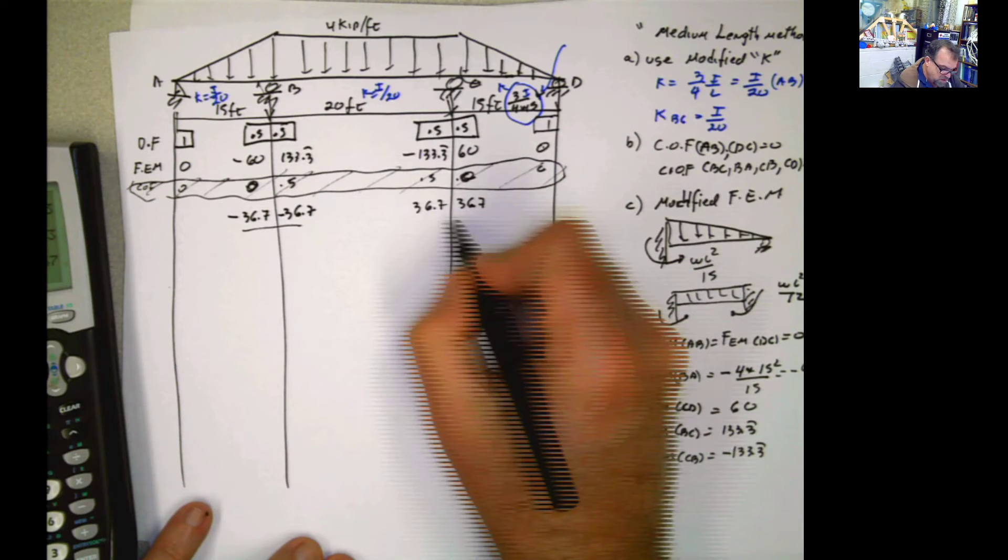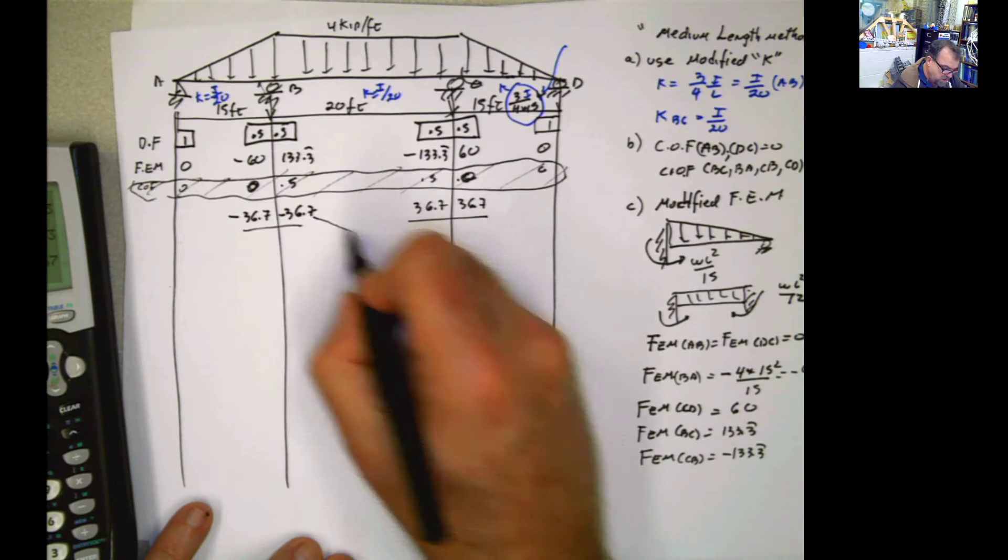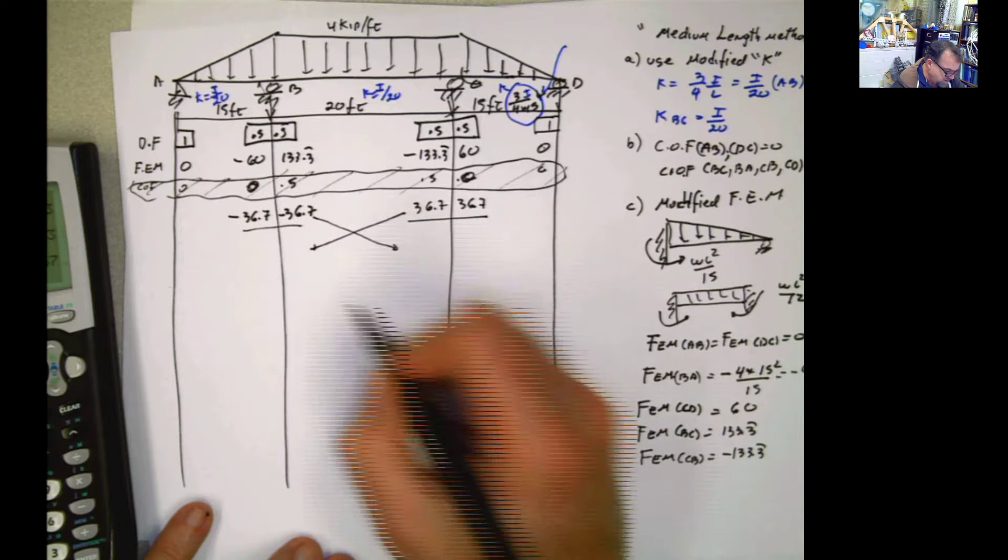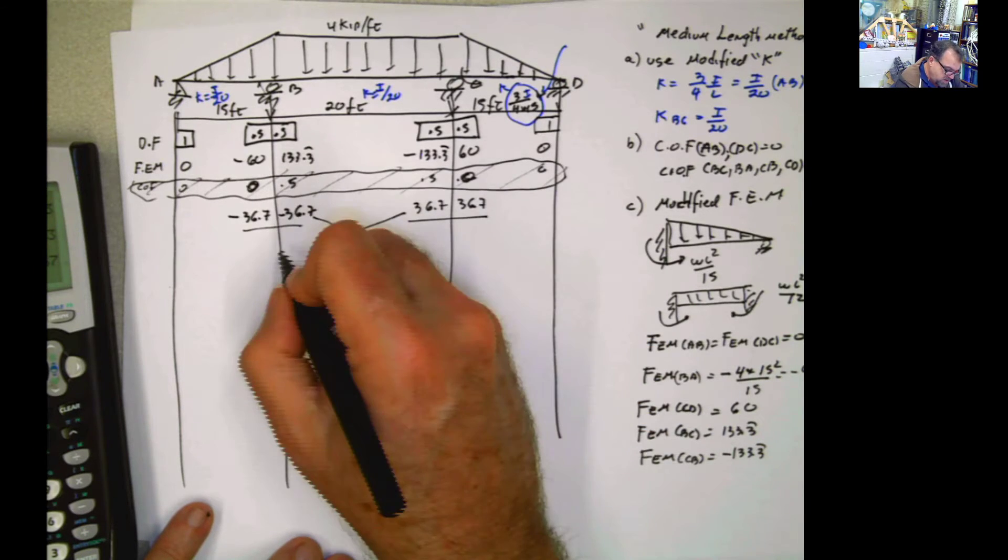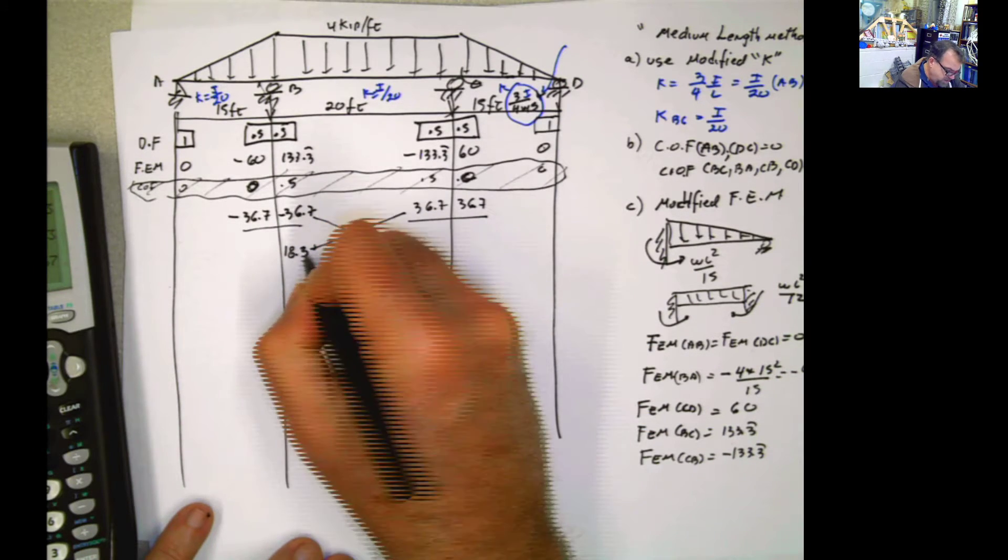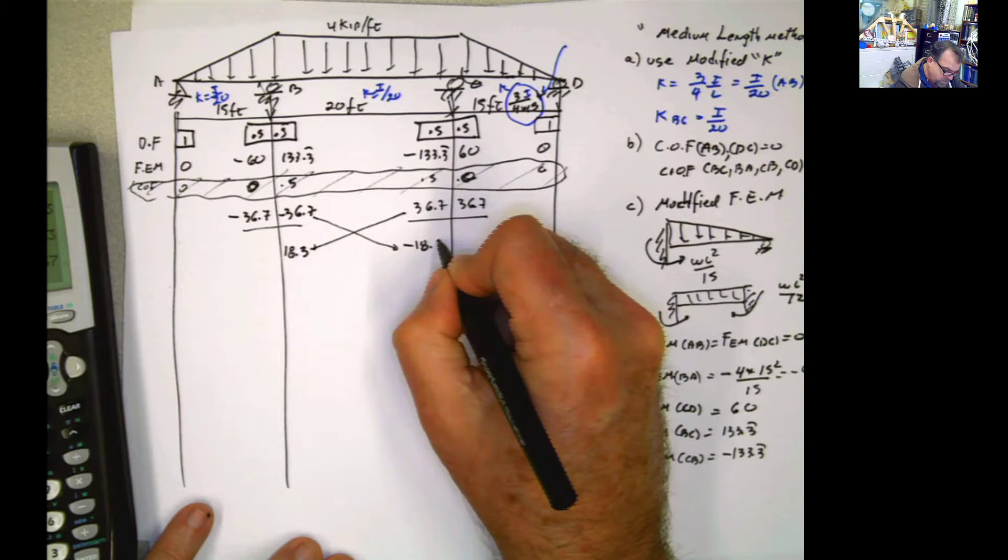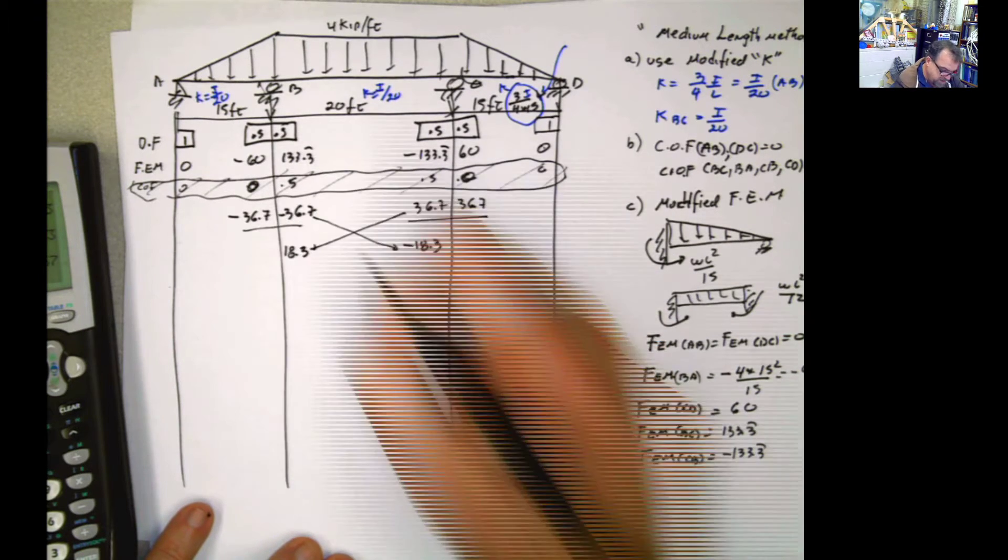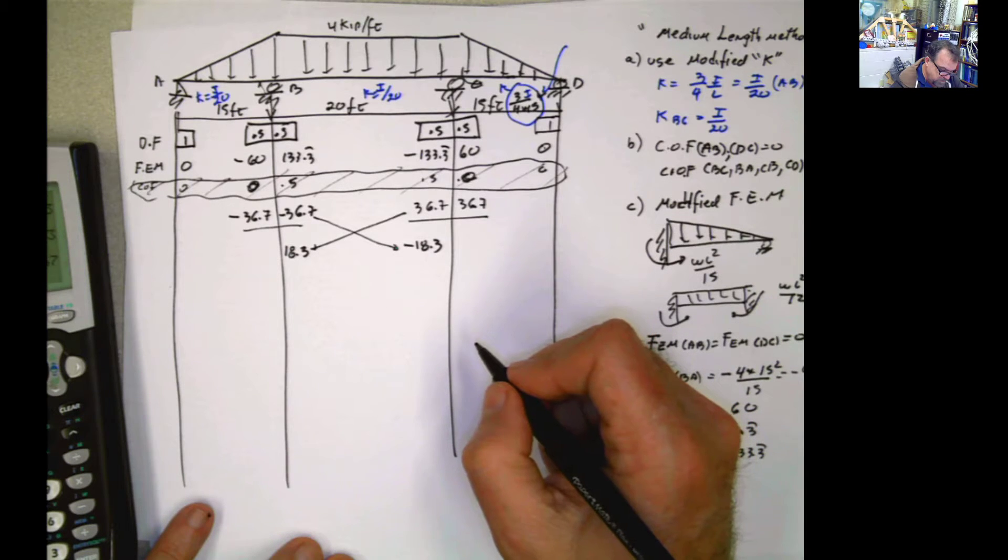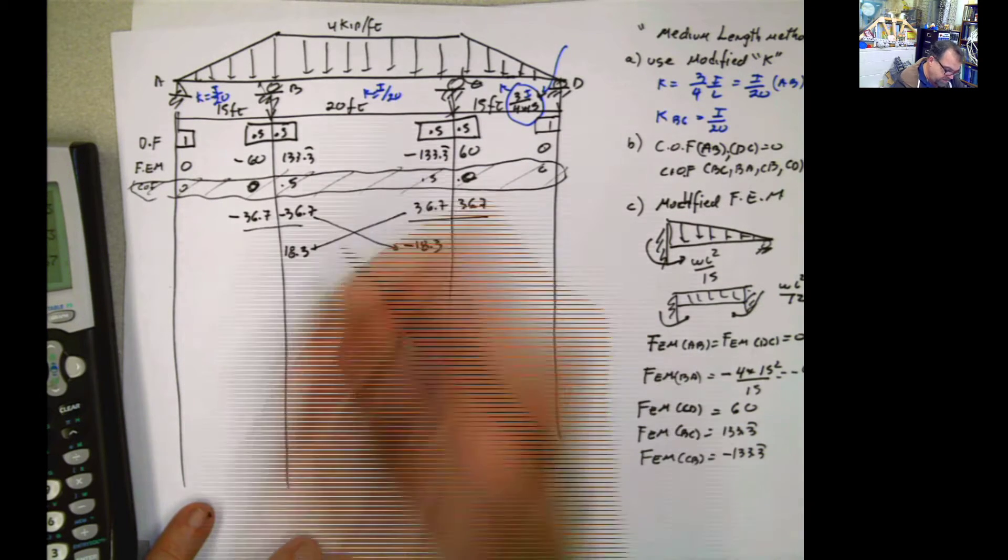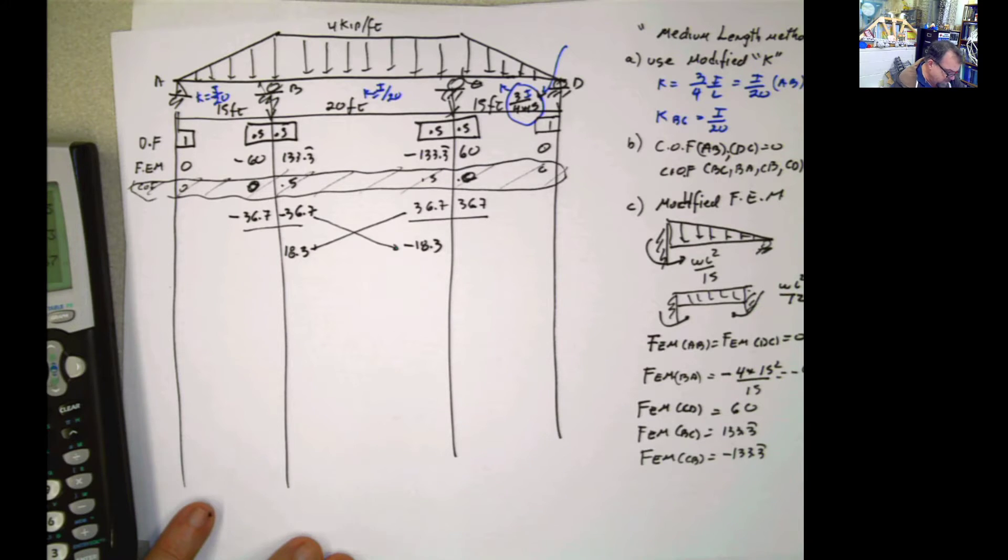Now, this is log. This is log. But this, however, transmits here. And this, however, transmits here. So this is 18.3. And this is negative 18.3, half of that. Now, I have to compensate for this, because this was 6. I have to compensate now for this.